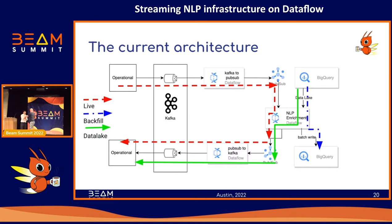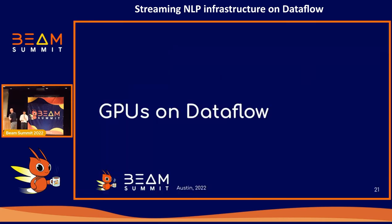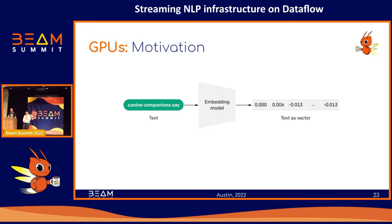I'll now hand over to Alex. I'd like to talk about our experiences operating GPUs for machine learning inference pipelines on Dataflow — both batch and streaming jobs. I'll also give an introduction to model drift detection and how we're using Beam pipelines to calculate drift metrics. Our ML inference workload involves running a large multilingual Transformer model from Hugging Face, which we run locally in the Dataflow pipeline workers, so it made sense to provision GPU resources to speed this up.